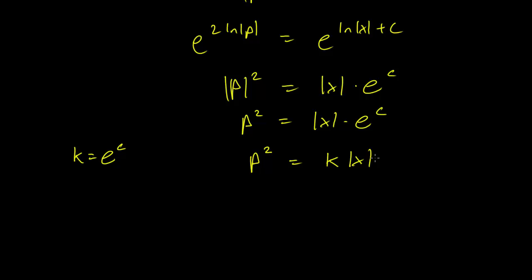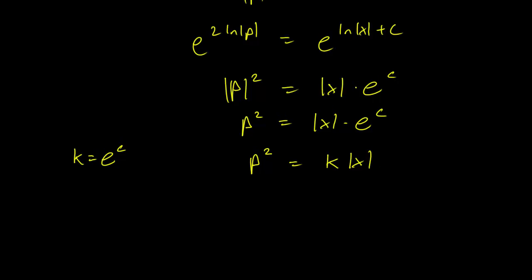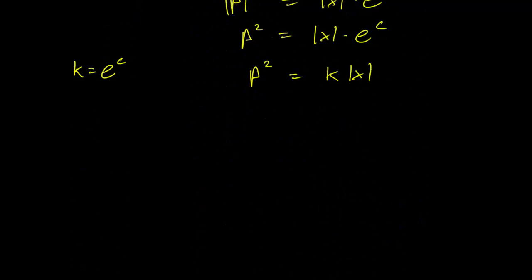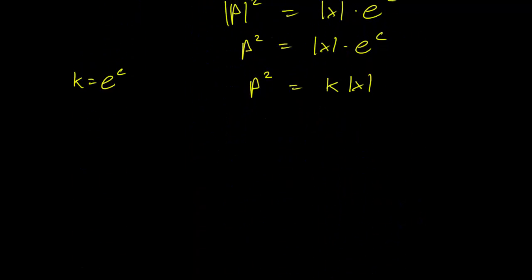So this is going to be our general solution in terms of p, but we have to remember to substitute back the y. Remember that p equals y prime. Since p equals y prime, what we end up with is y prime squared equals k times x. And this makes it a bit easier. So we can write y prime equals root of kx.